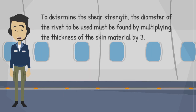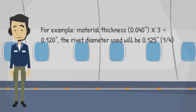To determine the shear strength, the diameter of the rivet to be used must be found by multiplying the thickness of the skin material by three. For example, material thickness 0.040 × 3 equals 0.120 inches; the rivet diameter used will be 0.125 inches, or one quarter inch.